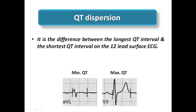This is because a large QT dispersion indicates a substrate for re-entry, as there is a voltage difference between different sites in the heart — each ECG lead looks at a certain portion. When the difference between the longest and shortest QT intervals is large, this reflects large differences in conduction velocity, acting as a substrate for re-entry. Many papers discuss the correlation of QT dispersion with risk of sudden cardiac death in patients with long QT syndrome.